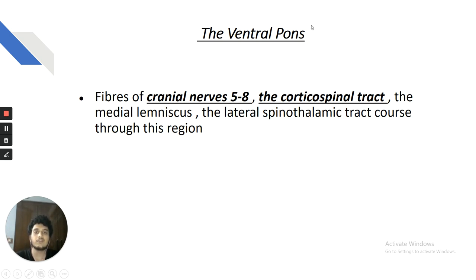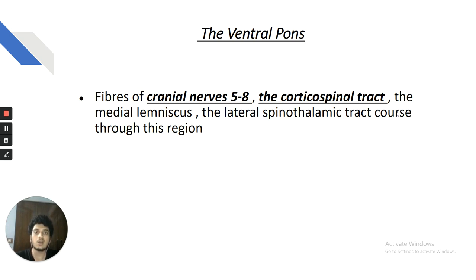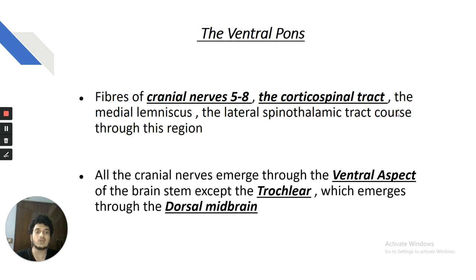The pons is very important — all cranial nerves 5 to 8 emerge at the junction of the pons and medulla, and the corticospinal tract has maximum connections in the ventral pons. Pontine hemorrhages result in quadriplegia and bilateral Babinski sign. All cranial nerves emerge from the ventral aspect of the brainstem except the trochlear nerve, the fourth nerve, which emerges from the dorsal part of the midbrain.